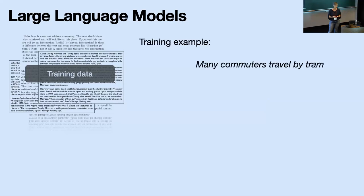Let's start by looking at the basics of large language models — the very basic mechanisms behind language models. Large language models are trained on tons of text, very large amounts of text available on the internet and whatever you can grab. A possible training sentence might be: 'Many, many commuters traveled by tram.' That's a training sample.